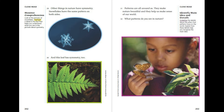Other things in nature have symmetry too. Snowflakes have the same pattern on both sides, and this leaf has symmetry as well. Patterns are all around us — they make nature beautiful and they help us make sense of our world. What patterns do you see in nature?